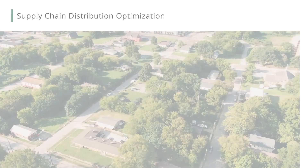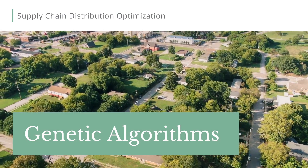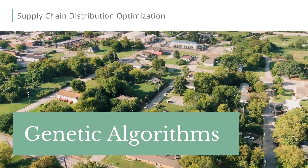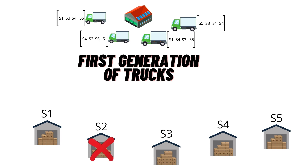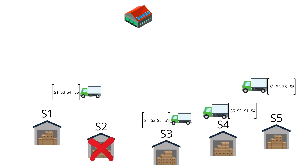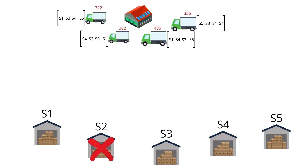The idea behind the genetic algorithm is the following. We generate a number of trucks — this is the population that represents the first generation. Each truck represents a chromosome and each truck has a random routing schedule. Each truck travels around using the route assigned, so we can evaluate the fitness of that truck.